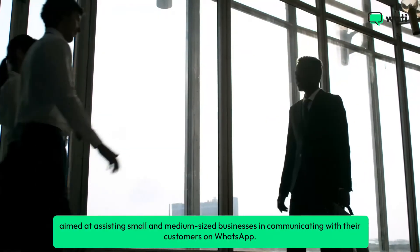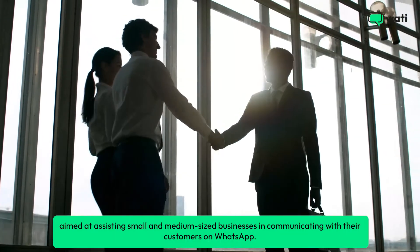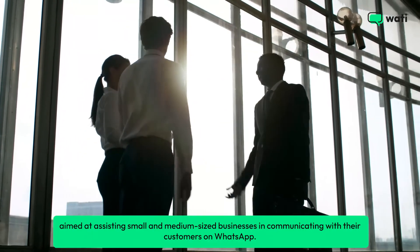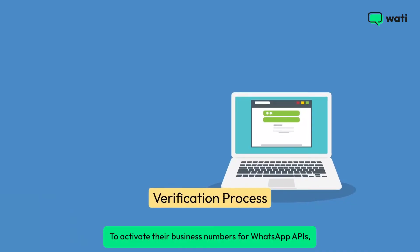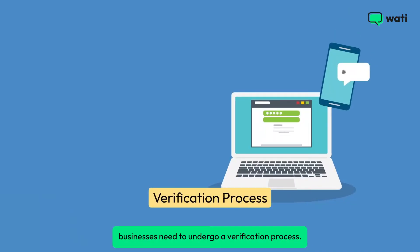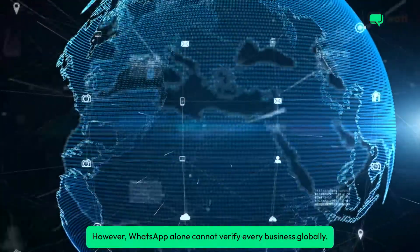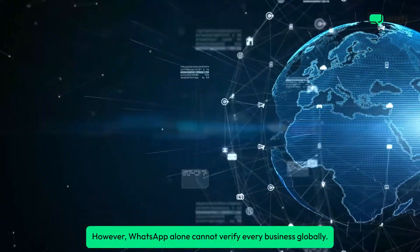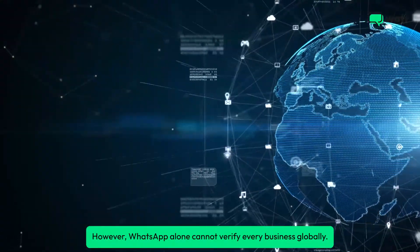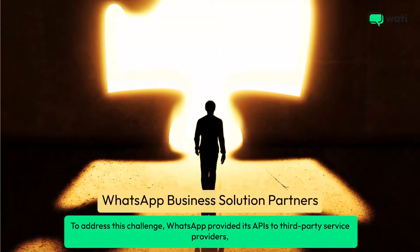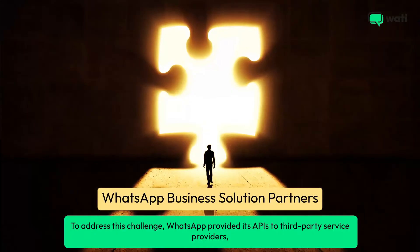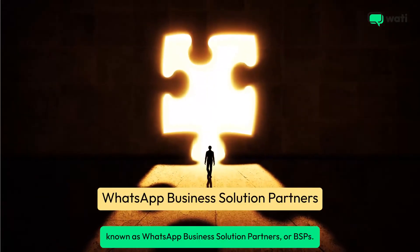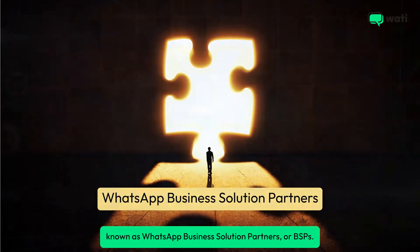The WhatsApp Business API was aimed at assisting small and medium-sized businesses in communicating with their customers on WhatsApp. To activate their business numbers for WhatsApp APIs, businesses need to undergo a verification process. However, WhatsApp alone cannot verify every business globally. To address this challenge, WhatsApp provided its APIs to third-party service providers known as WhatsApp Business Solution Partners, or BSPs.